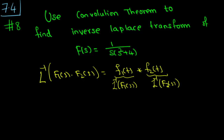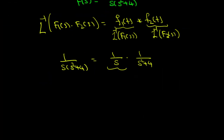We can write 1 over s(s² + 4) as (1/s) times (1/(s² + 4)). Let us say this is F1(s) and this is F2(s).